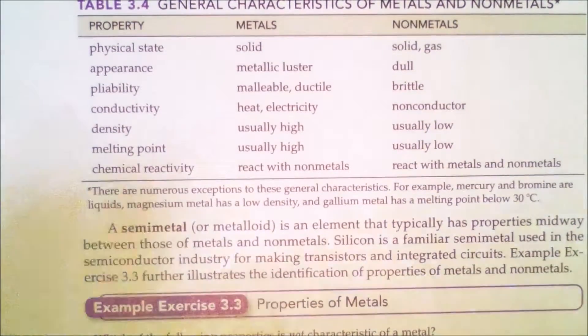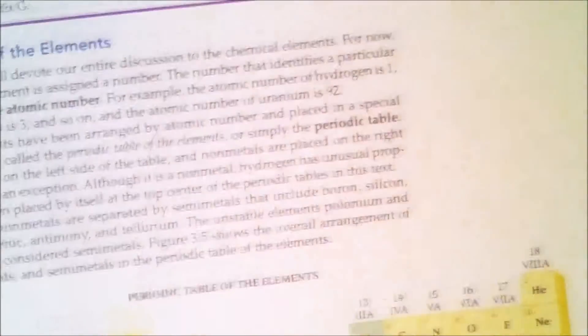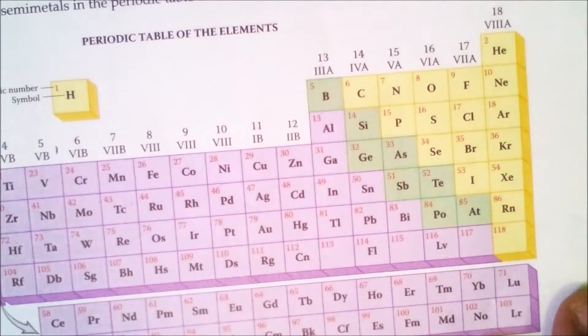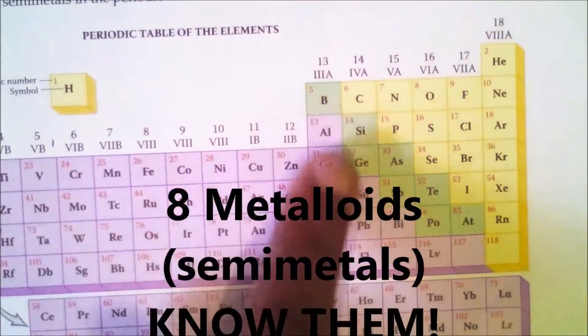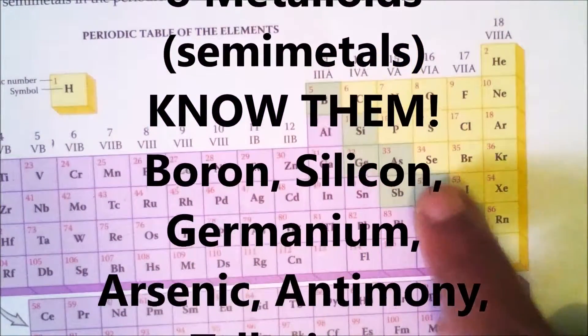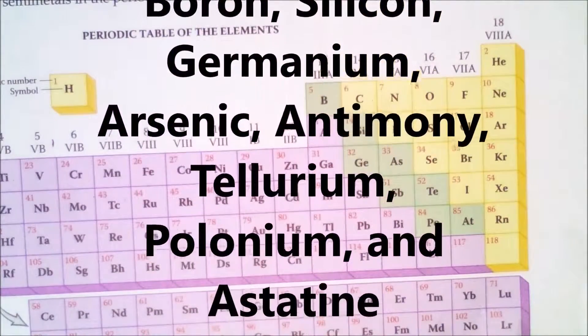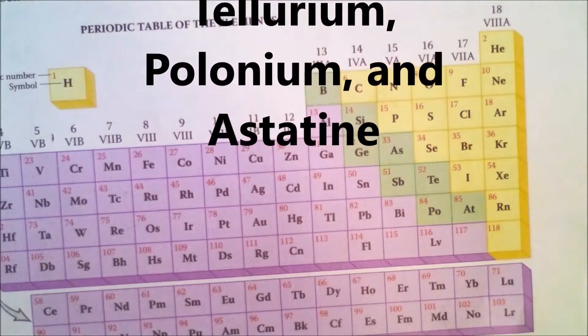If I were to look back at my periodic table again at that staircase, and make sure you have this written out in your notes, there are eight of those elements that are very important. Boron, silicon, germanium, arsenic, antimony, tellurium, polonium, and astatine. Those are the eight elements that are called your semi-metals, also known as your metalloids.